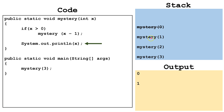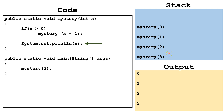Now we continue back down to the previous call and complete the unprocessed portion of that method. Here x equals 1, so we output 1, then pop this off the stack. Then we go down to the next one: x equals 2, so we output 2, and pop that off the stack. Finally, we go to the last one where x is 3, output 3, then pop that off the stack and finish the program.